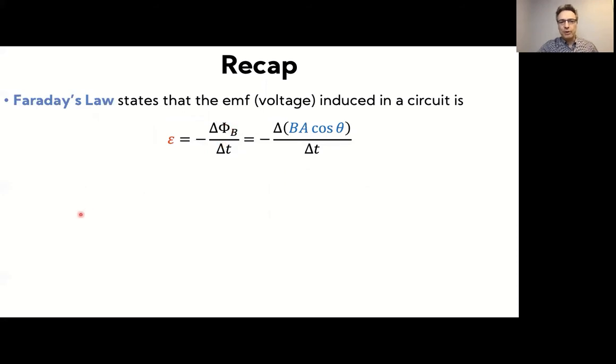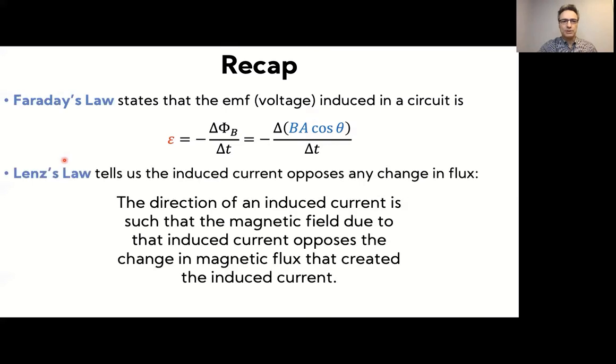So we've seen that in a uniform magnetic field and a planar surface, this reduces to BA times cosine theta, where the cosine of theta, theta is the angle between the magnetic field and the vector normal to the surface area. That's Faraday's law.